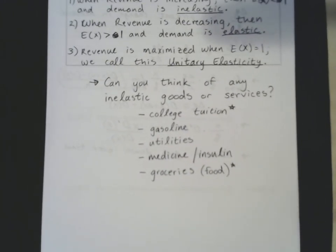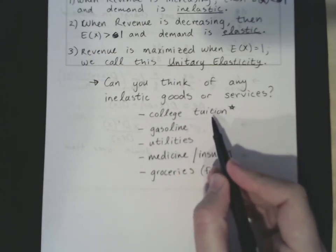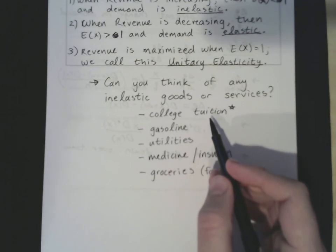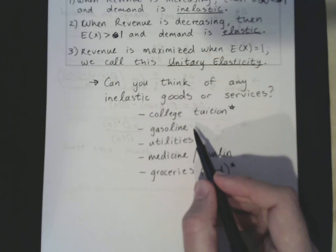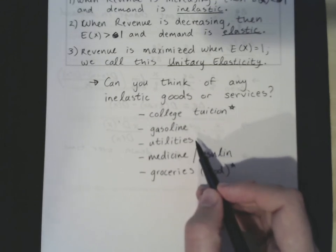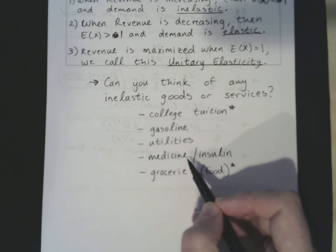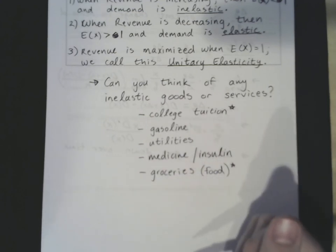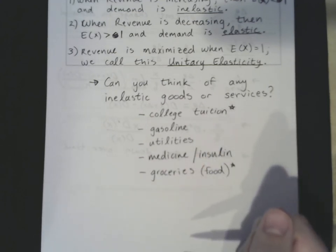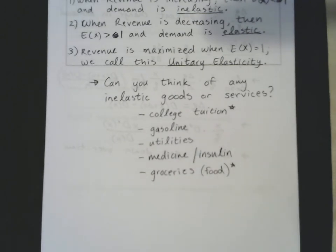Inelastic goods and services are all around us. You know they're inelastic because even when prices get very expensive, you still buy them: tuition, gas, electric bills, prescriptions, food. There are plenty of other examples, and I recommend thinking of some as you work through the homework problems. That is the end of Section 3.7.